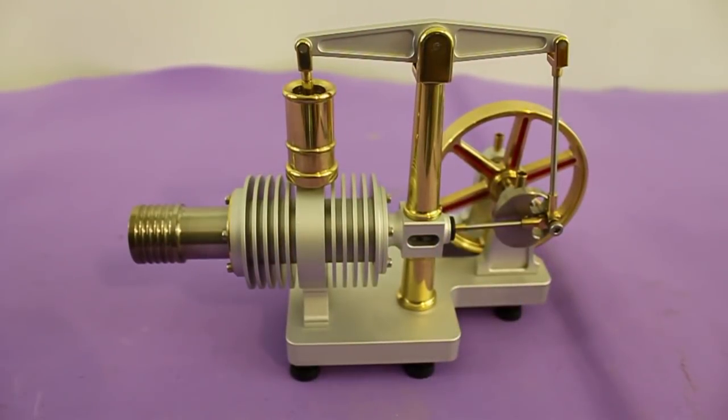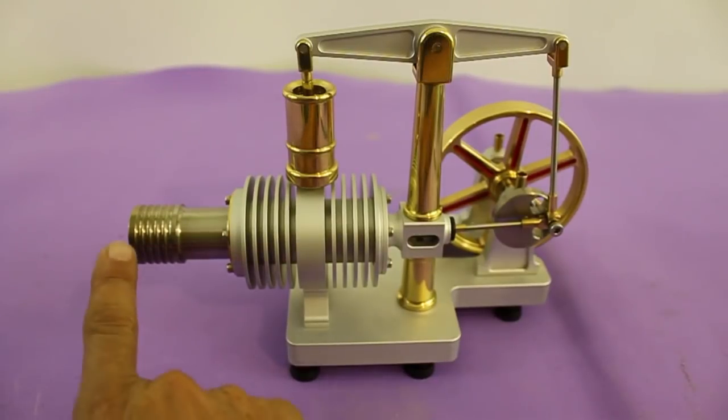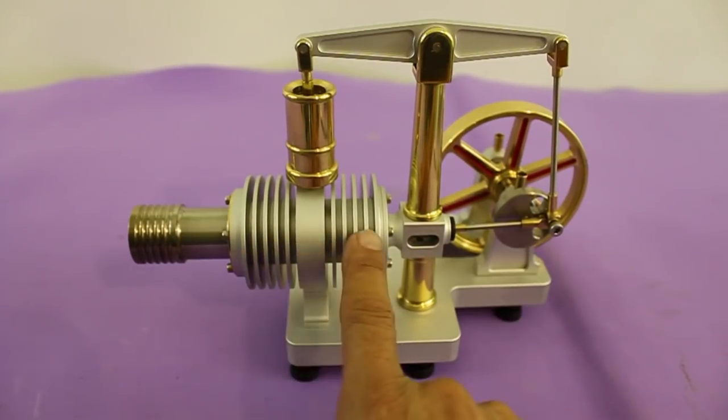As with any Stirling engine, we have two cylinders and two pistons. This is the displacer cylinder which contains the displacer piston. This piston moves the air from the hot side to the cold side. This is why we have this radiator here which cools the air.